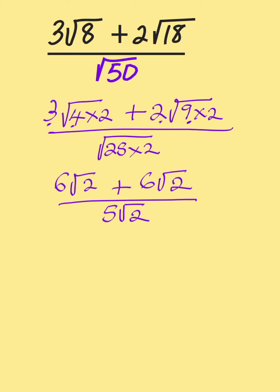Now in the numerator, we have similar surds because both of them contain the same number in their root. So we add 6 and 6 together, that will give us 12√2 all over 5√2.